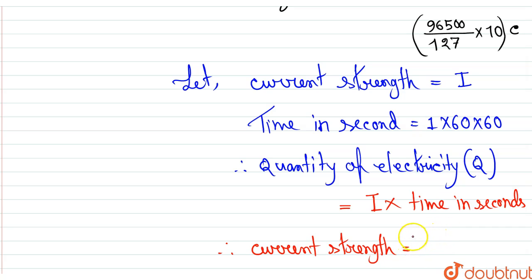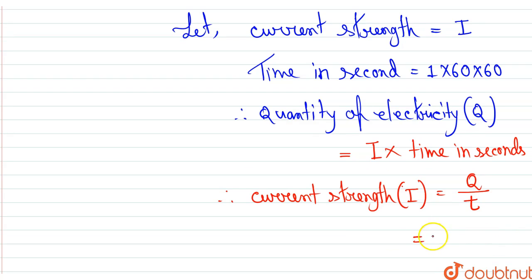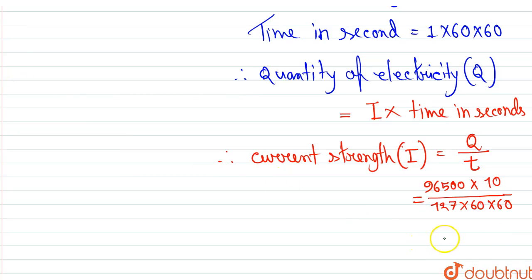The current strength I equals Q divided by t. So it will be (96500 × 10) divided by (127 × 60 × 60). This will be our required value, which equals 2.11 amperes.